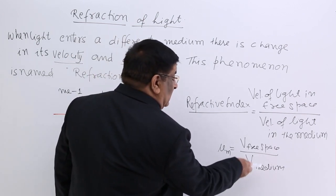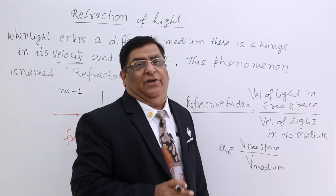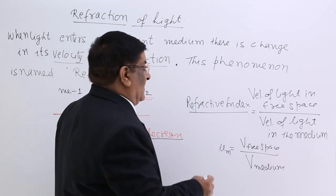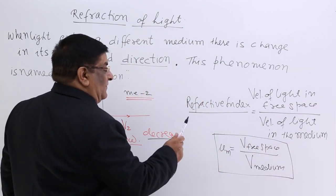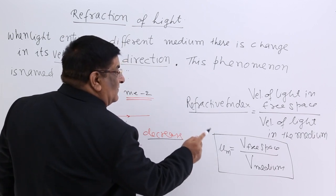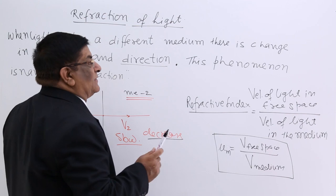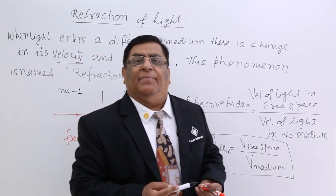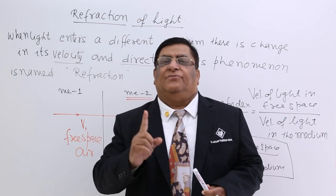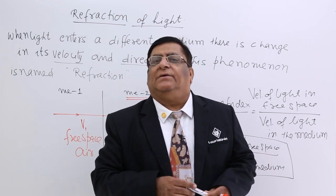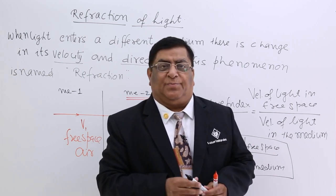Less is the velocity, more is the refractive index. That is the strength to decrease the velocity. This is the refractive index. And what happens to velocity? Remember it always decreases when light enters from free space. In free space there is velocity of light 3 into 10 to the power 8.